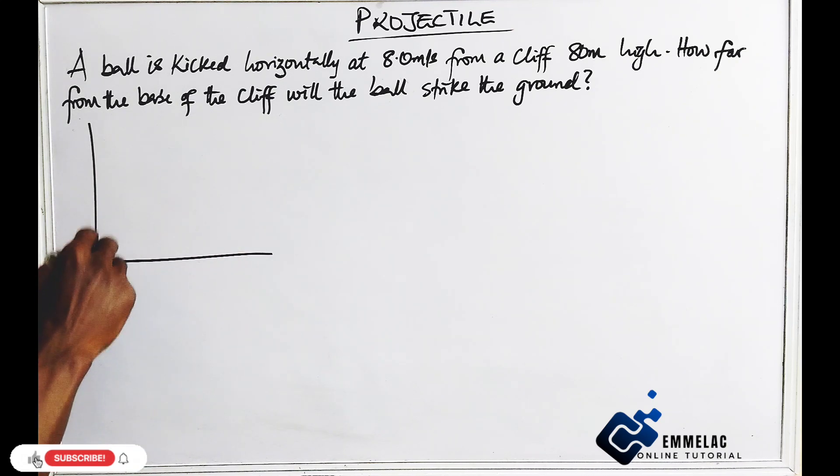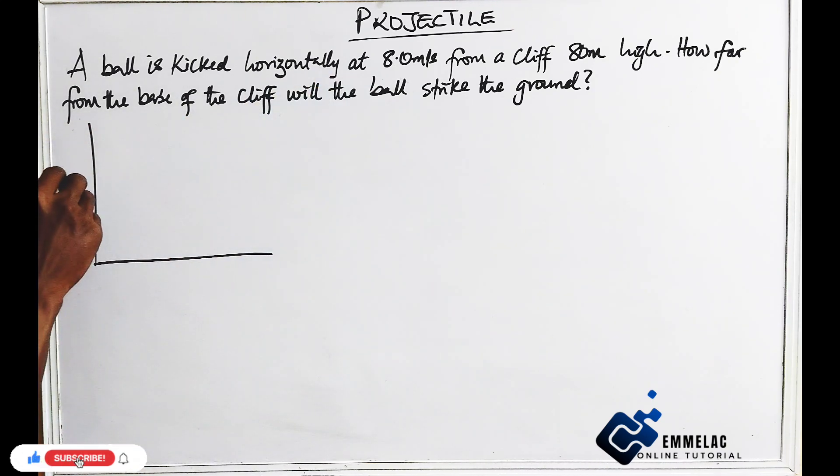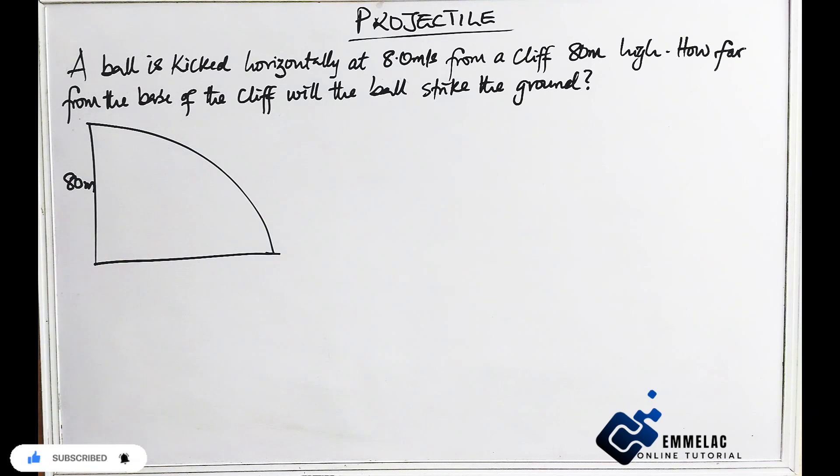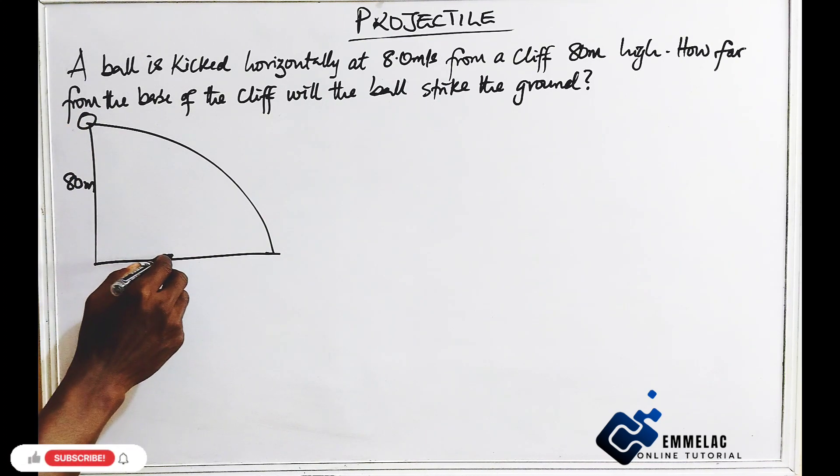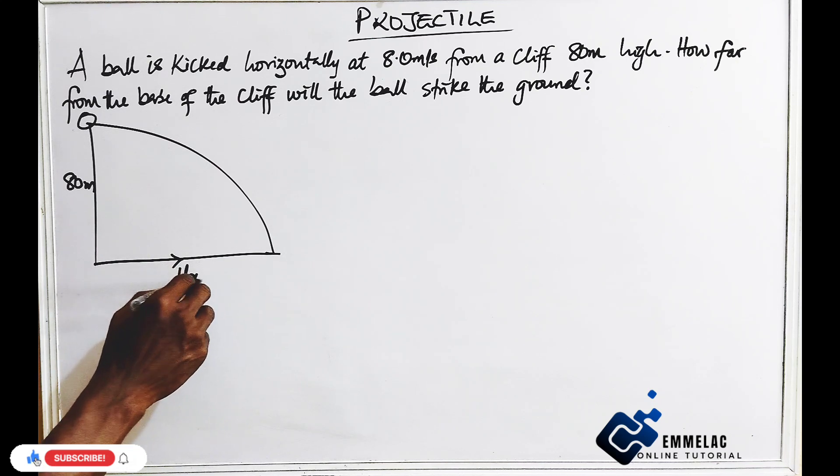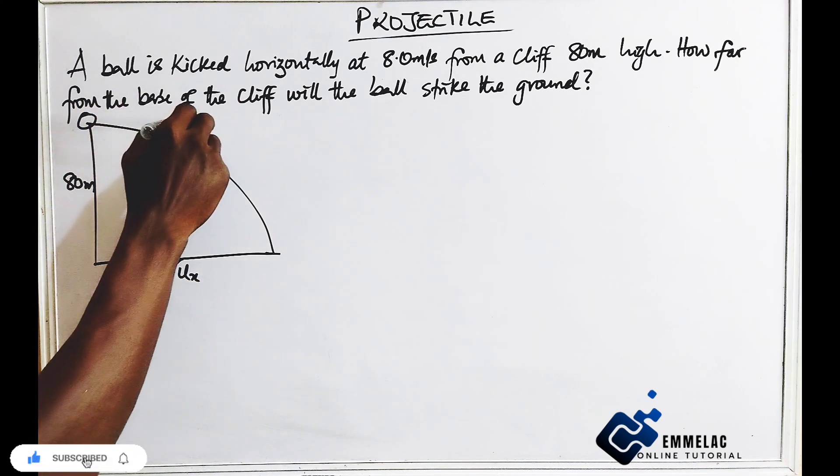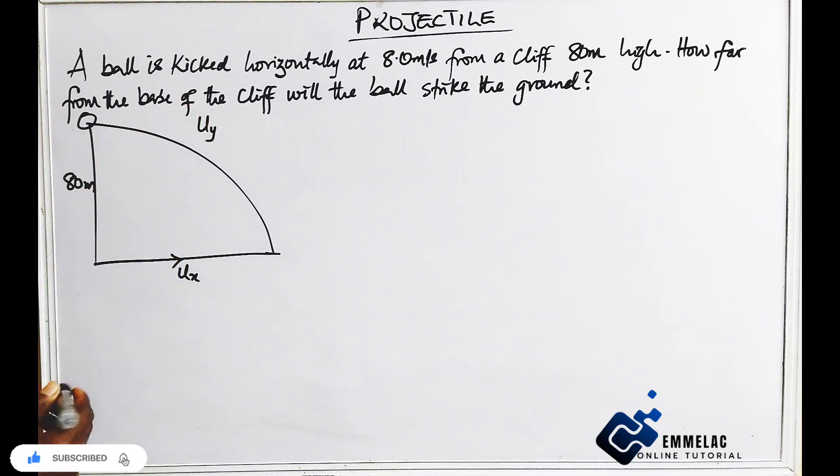Here is it. Now this is the cliff. Now the height is 80 meters. Now being kicked from here. And as such here now, here we have the horizontal velocity. Now the vertical velocity is this.